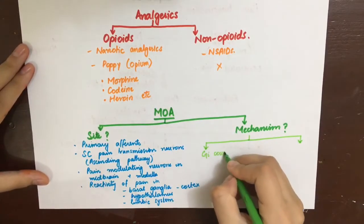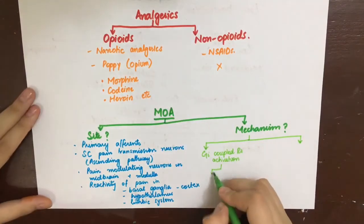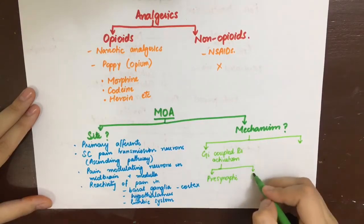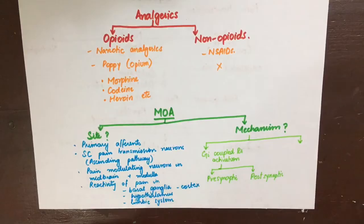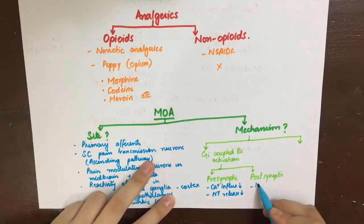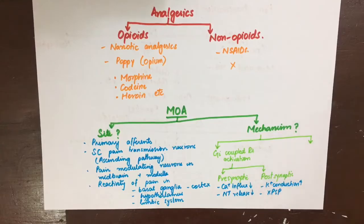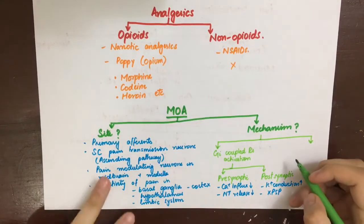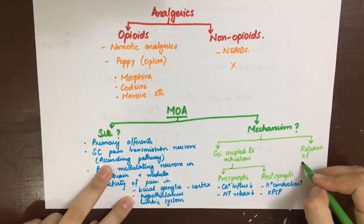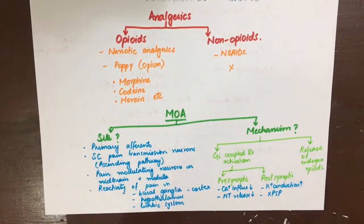The mechanism by which opioid analgesics work involves Gi-coupled receptor activation both pre-synaptically and post-synaptically, and also the release of endogenous opioids. Pre-synaptically, they decrease calcium influx — calcium being required for exocytosis of neurotransmitters — thus decreasing release of glutamate and substance P from nociceptor primary afferents. Post-synaptically, they increase potassium conductance, producing an inhibitory post-synaptic potential.